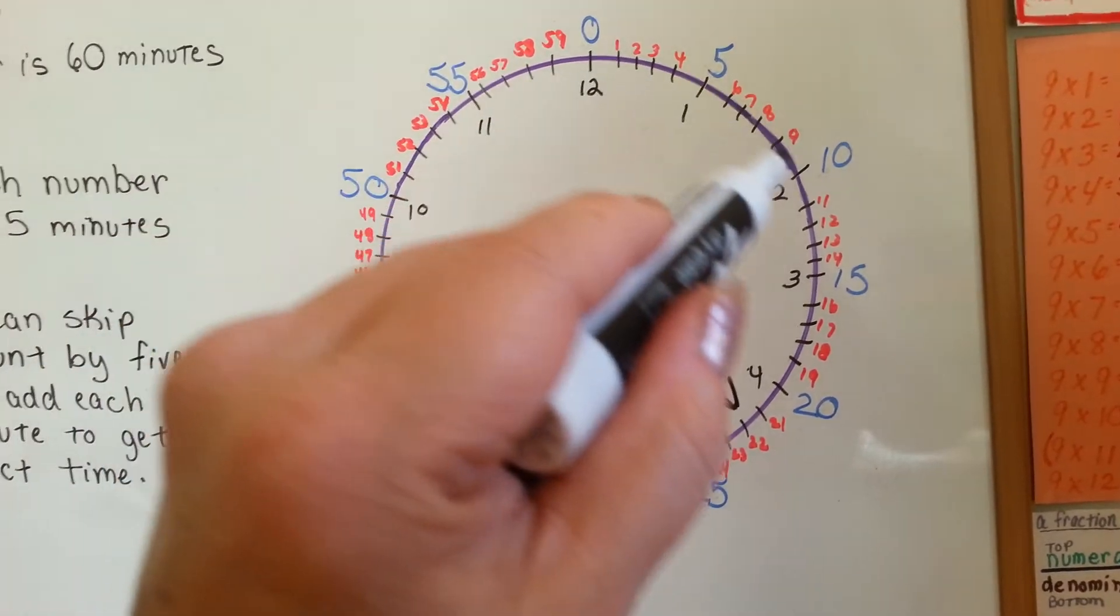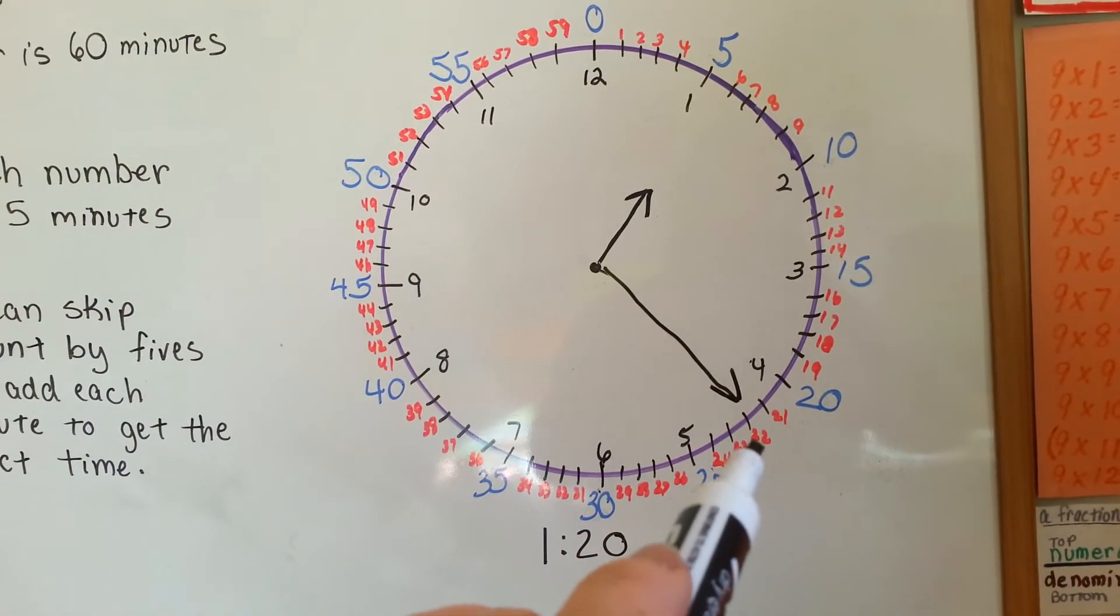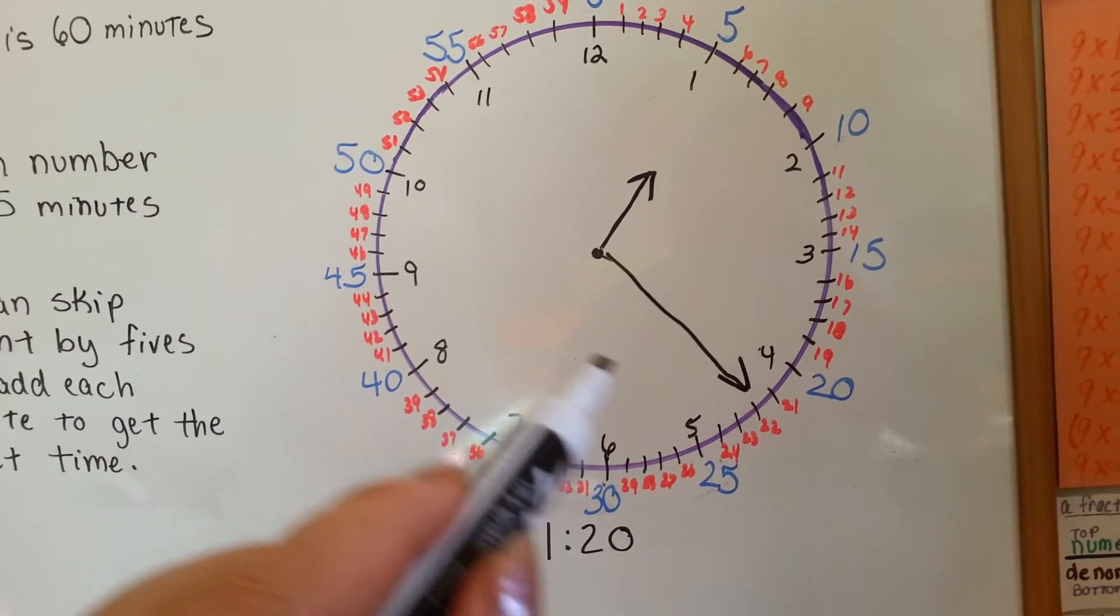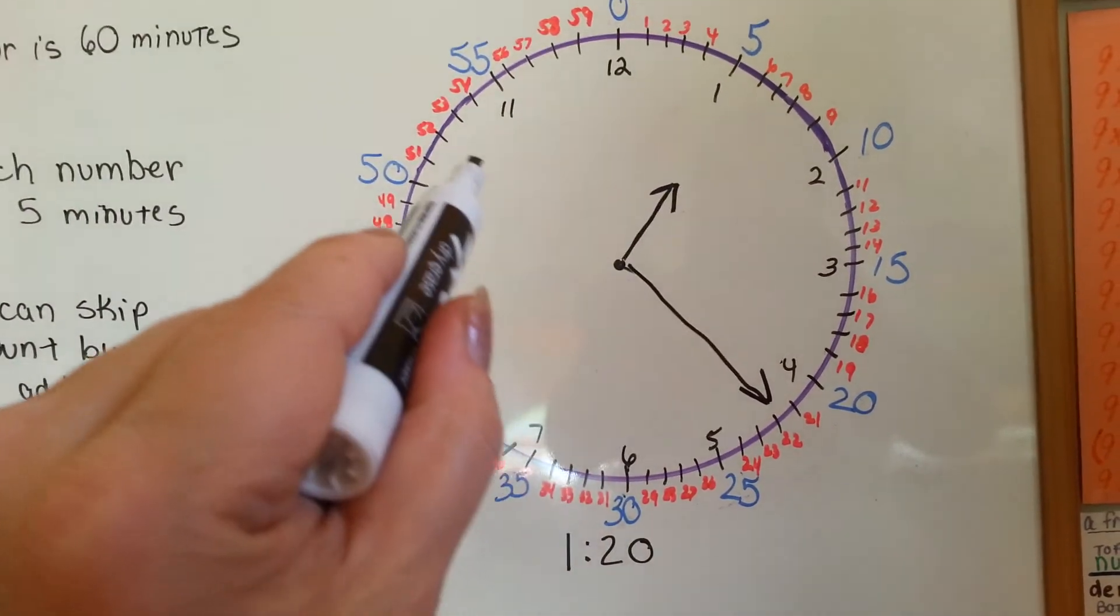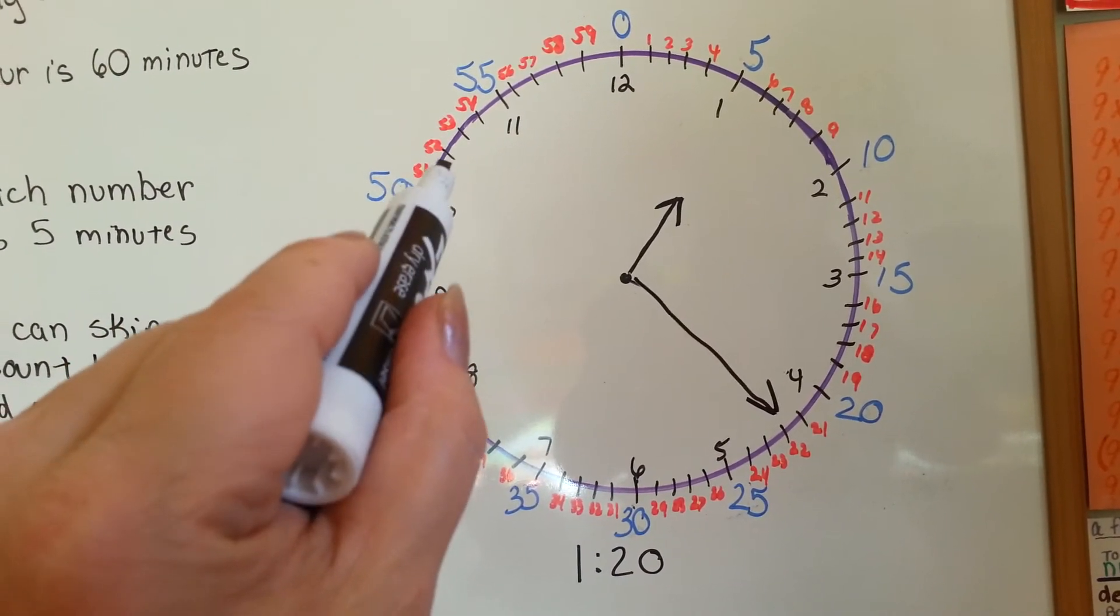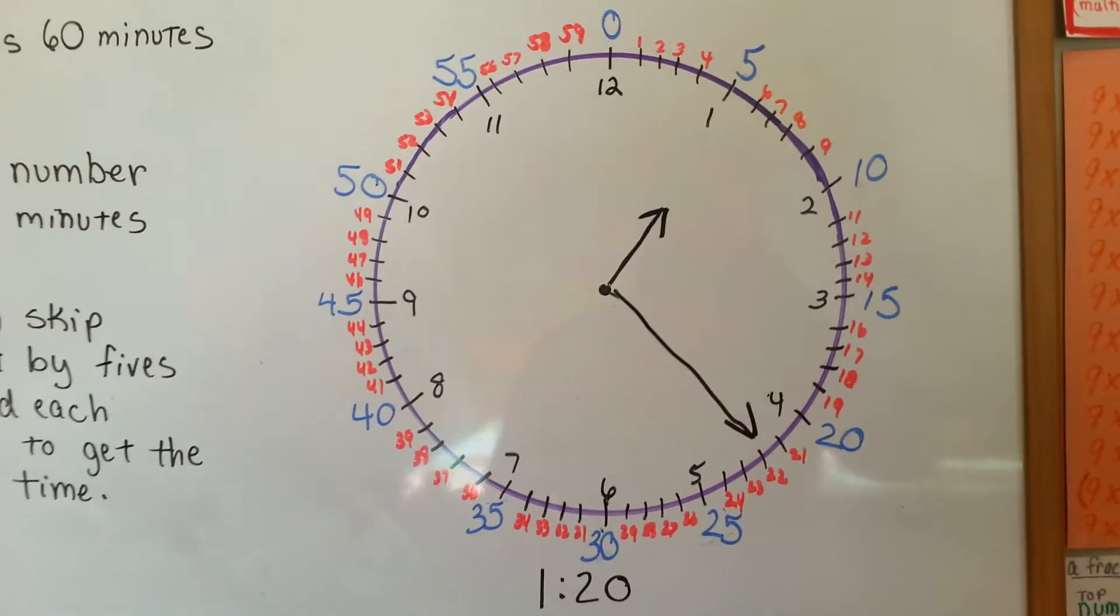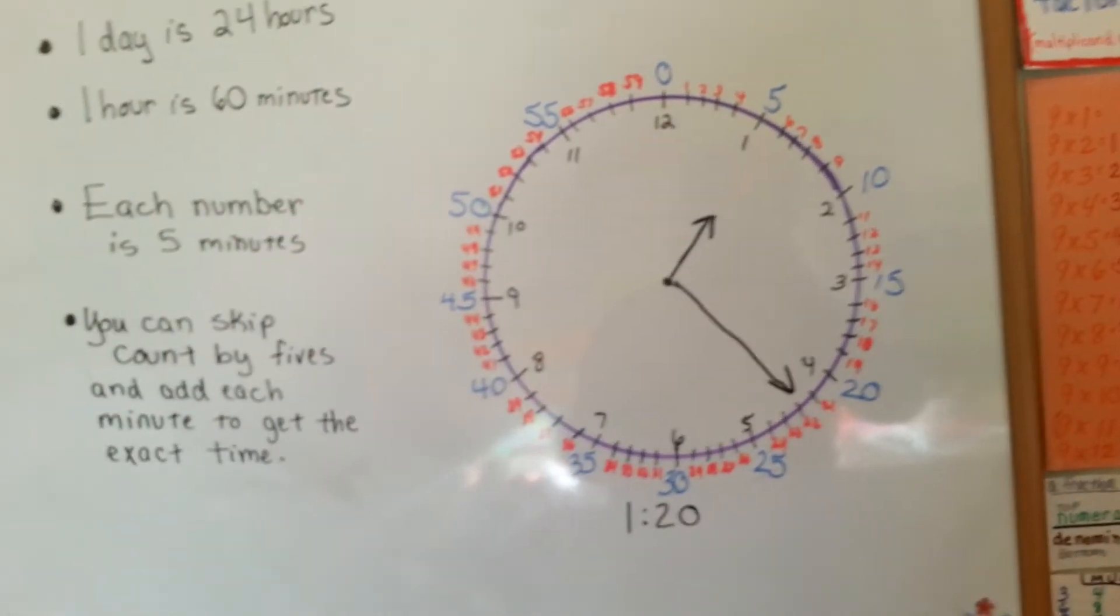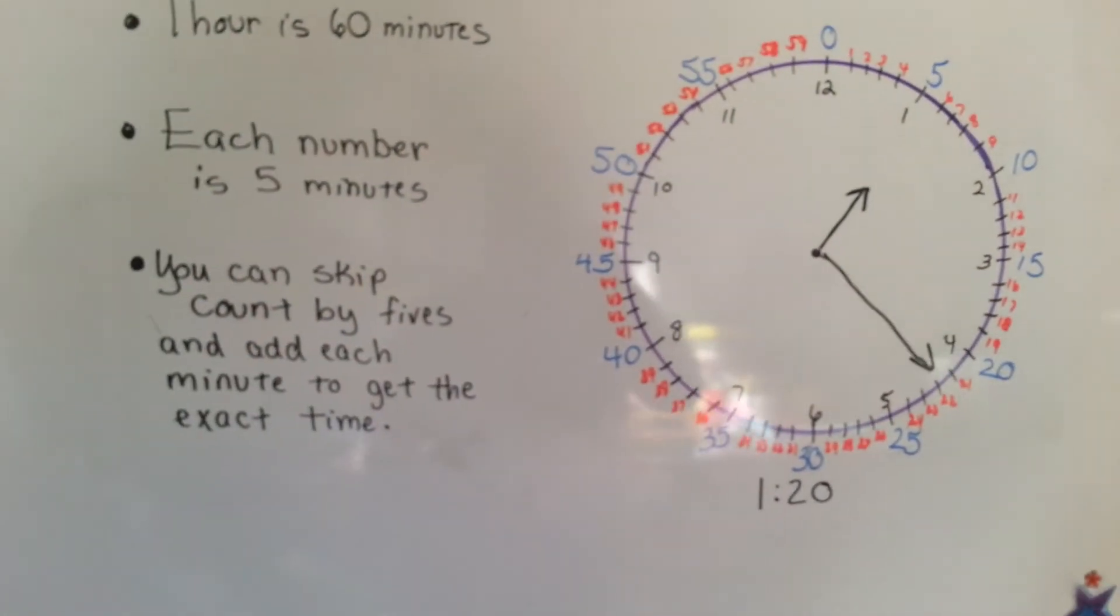You don't need to count every minute. Just skip count and then go and add 2 more. So, it would be 22. If it was pointing over here, we could skip count to the 50 and then add the 1 or 2 that we needed. See? So, just skip count by 5s and then add each minute to go to the exact time.